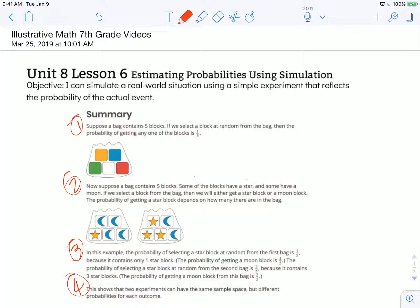So if we look at this first bag, the one on the left, you can see that there's one star and four moons. And if we look at the bag on the right, the second bag, we have three stars and two moons.